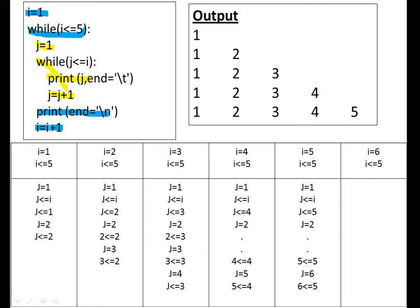Now we'll see the working principle. First, the outer loop: i equal to one, i less than or equal to five — condition is true because i is one. When the outer loop condition is true it goes to the inner loop. When the inner loop gets false, it goes to the increment, then back to the outer loop condition check. So the outer loop condition is true, now it checks j equal to one, j less than or equal to i — i is one, j is one, so the condition is true.